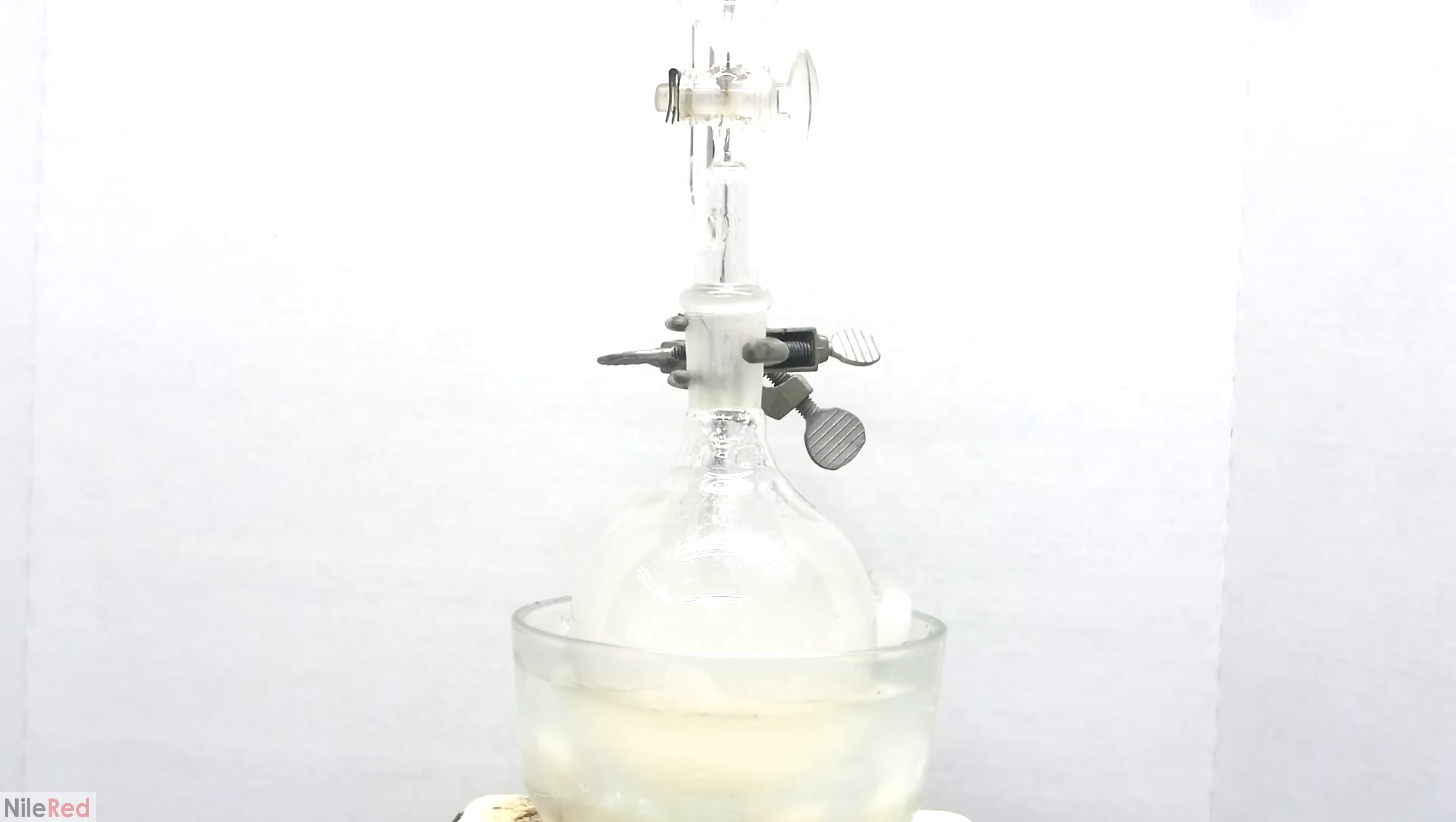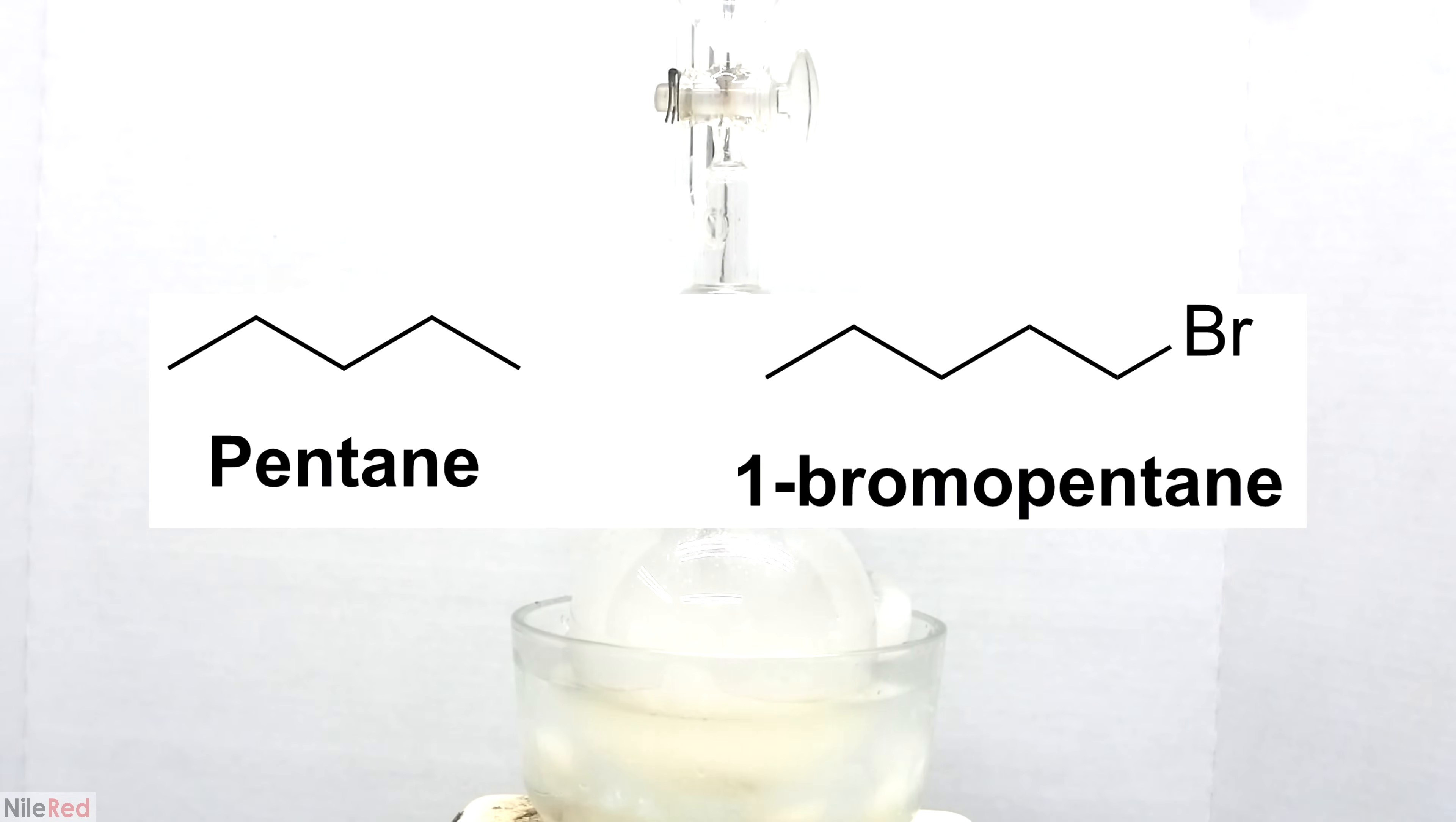1-bromopentane belongs to a class of molecules known as alkyl halides, and it's structurally quite simple. On the left here we have pentane, which is an example of a simple alkane. On the right, we have our 1-bromopentane, which is very similar, except one hydrogen has been replaced with bromine.